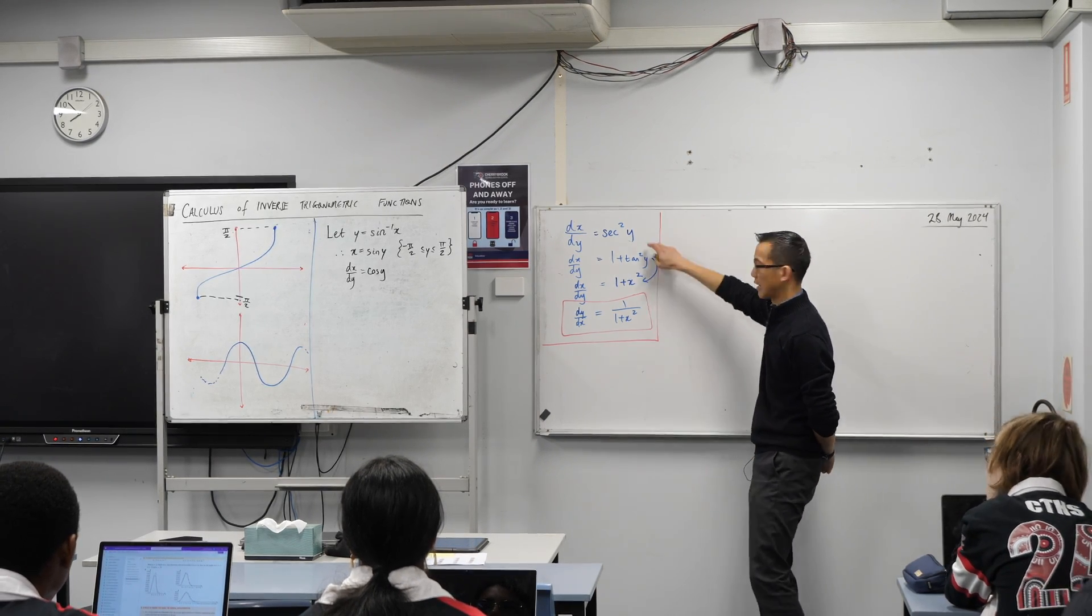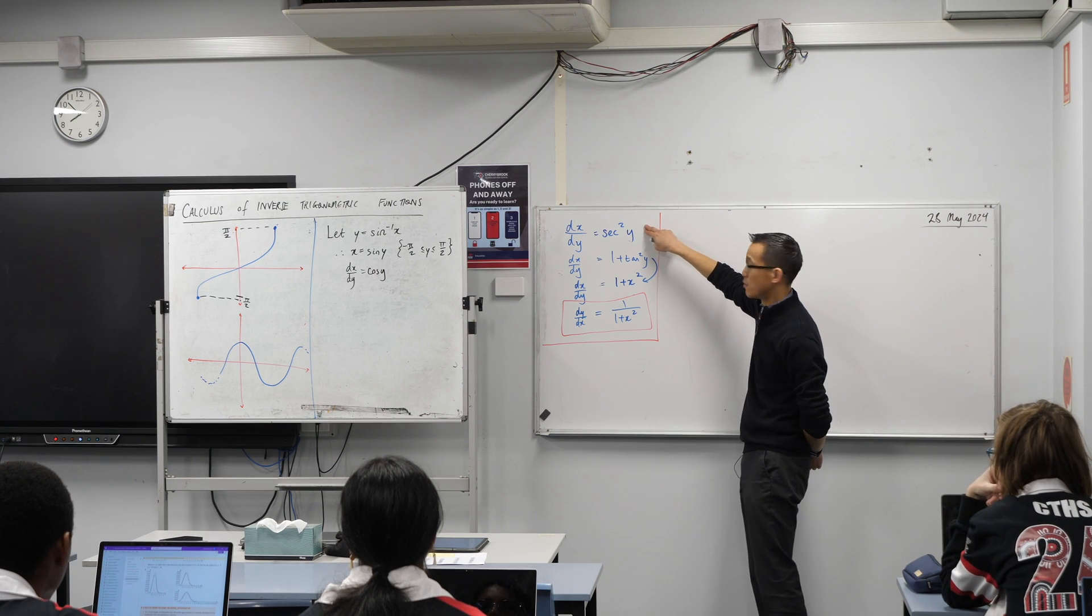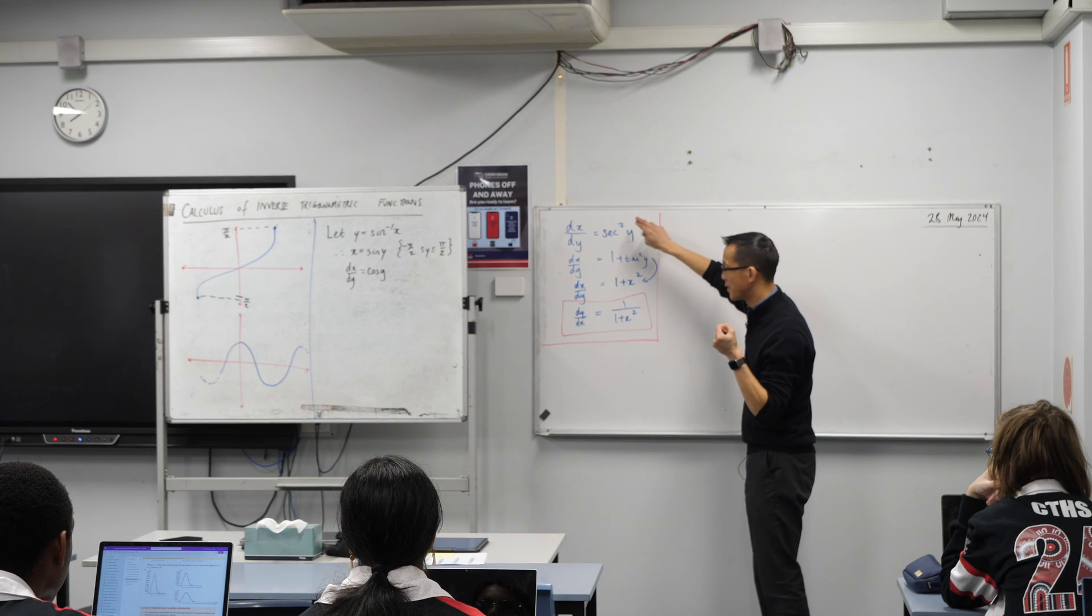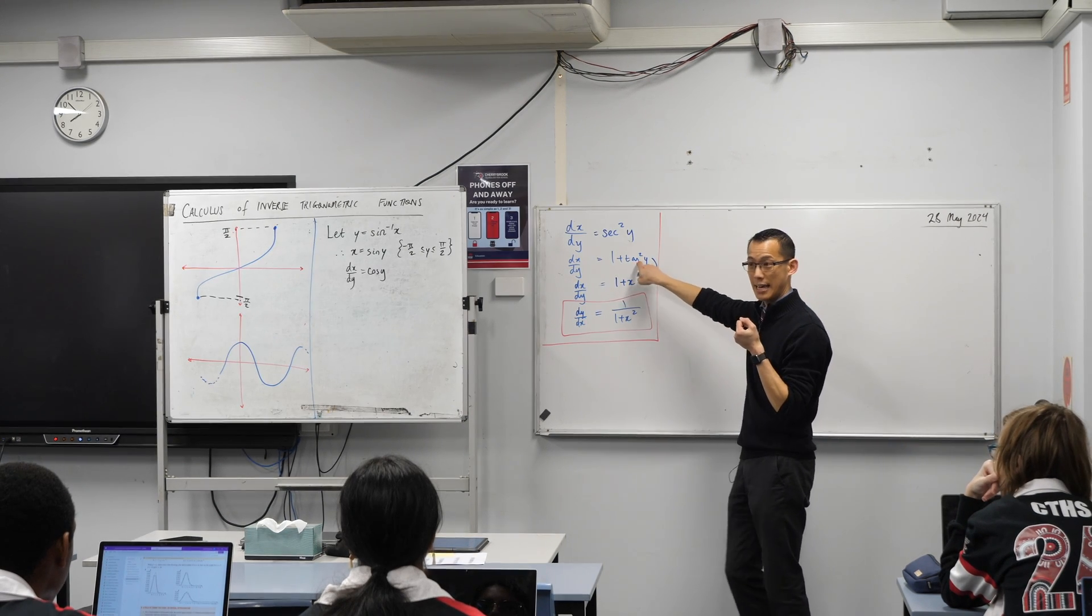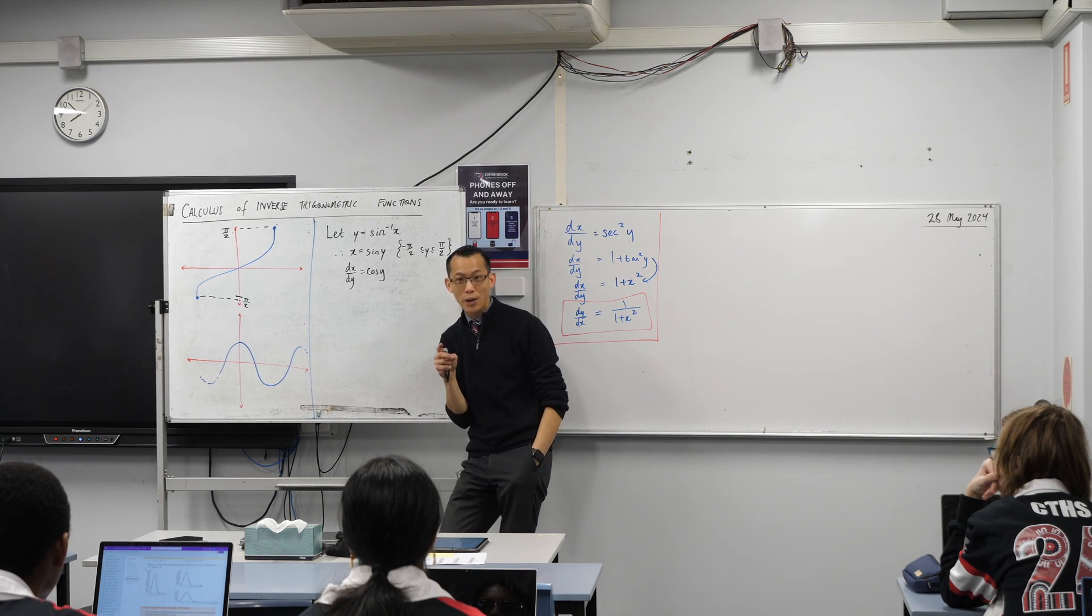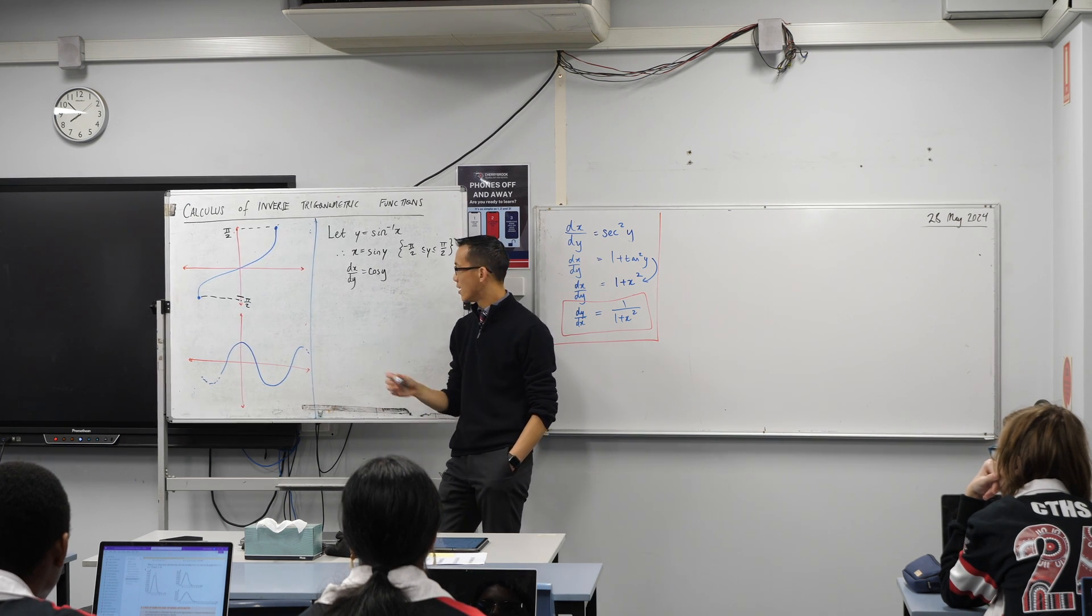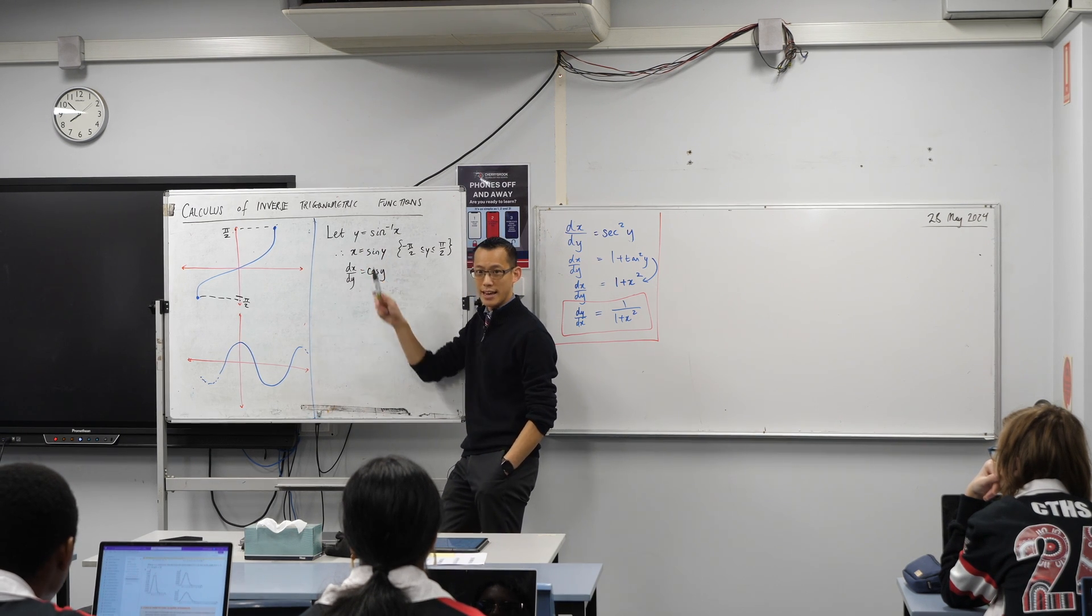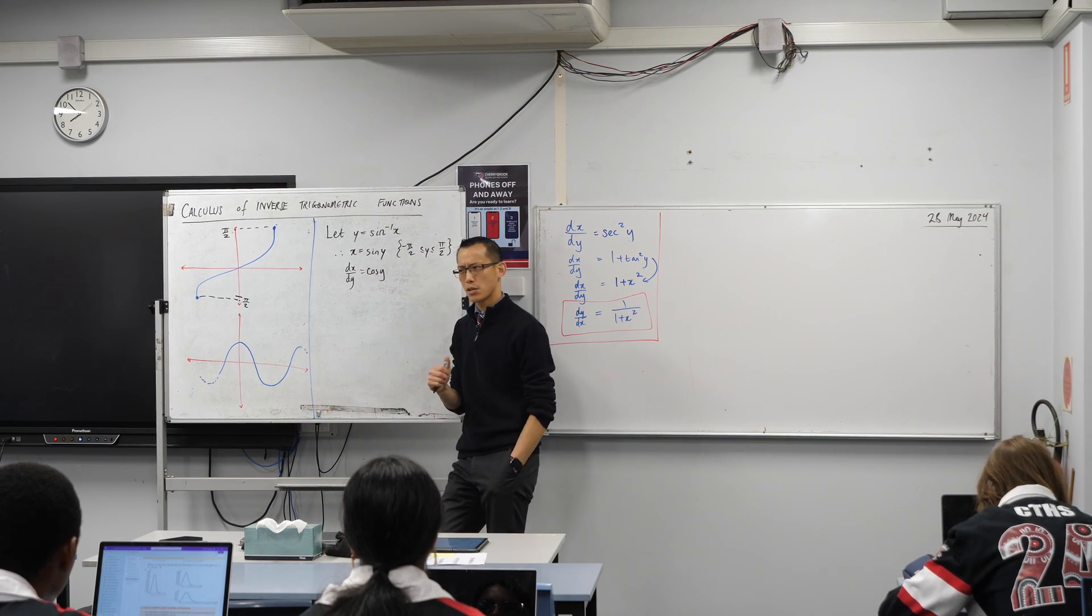But at this point, like in our tan proof, our tan inverse proof I should say, we had to pull out an identity to get us from sec land into tan land. Now there's something similar that we can pull here, and you've already used this identity today to get us from cos land back into sine land. What's the identity that's probably going to be most helpful here?